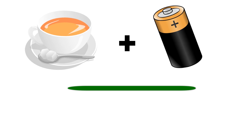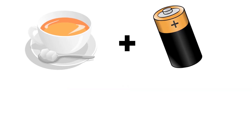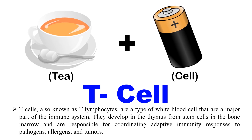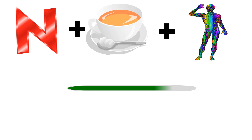You have to guess what term you can make by these two emojis, and the time is running out — be quick! Time is up. The answer is T cell, because the first emoji represents T and the second emoji represents cell, so combining them makes T cell. T cells are immune cells, also called T lymphocytes. They are a major part of the immune system, develop in the thymus from stem cells, and are responsible for adaptive immunity.